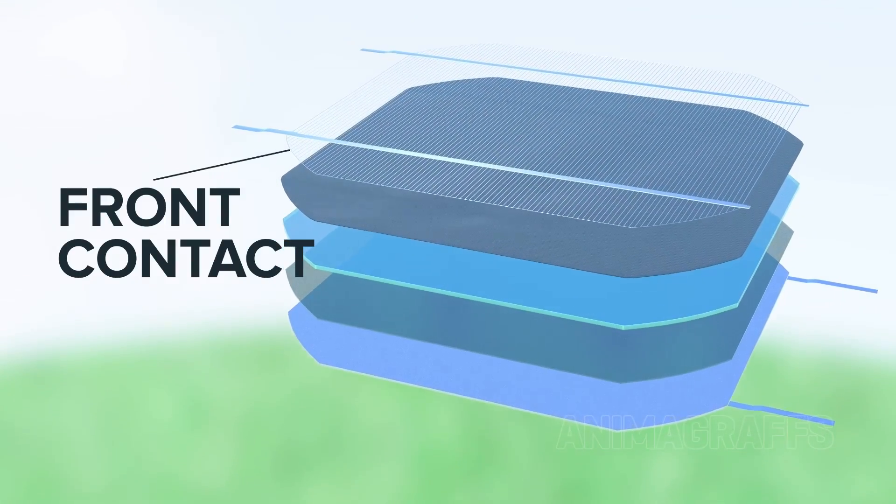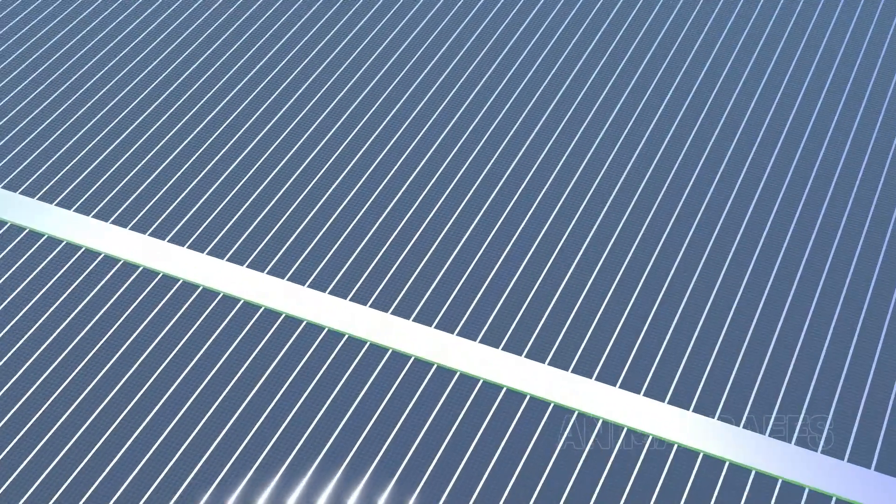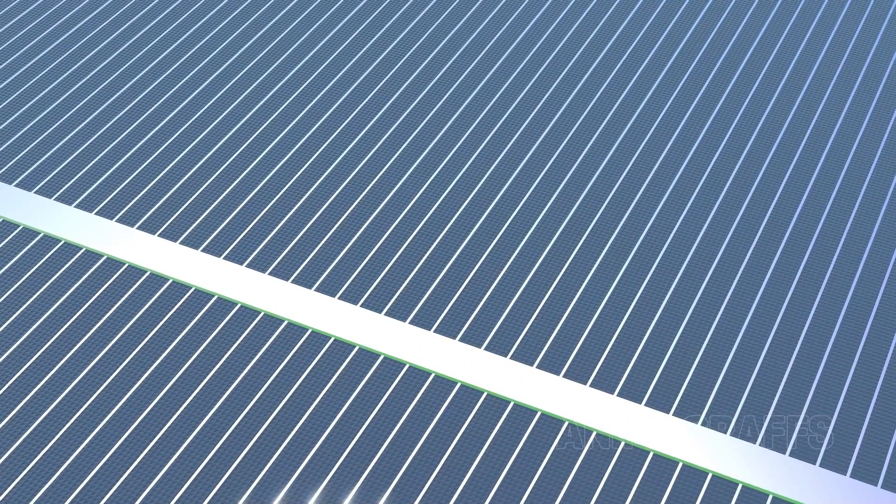Front contact. Metallic fingers are screen-printed and bonded to the top of the cell. They're designed for optimal charge collection but minimal shading.